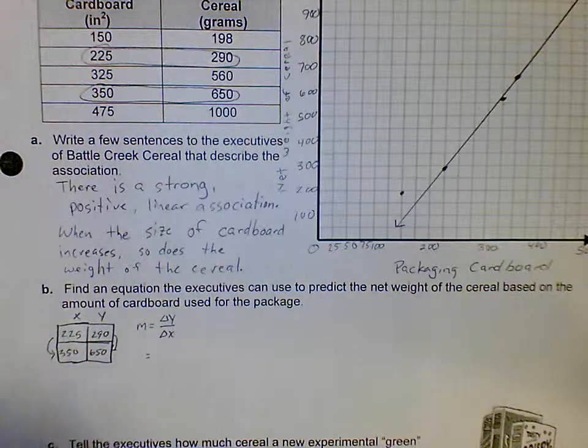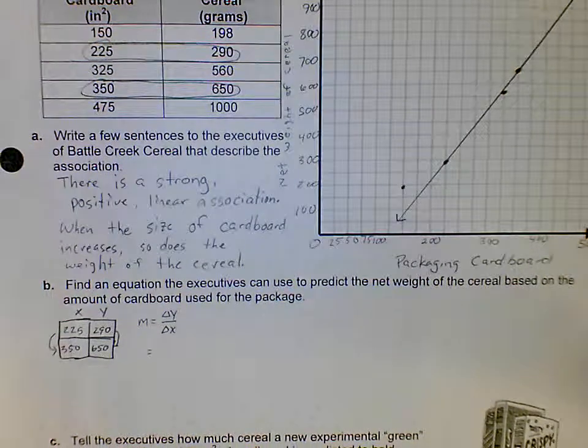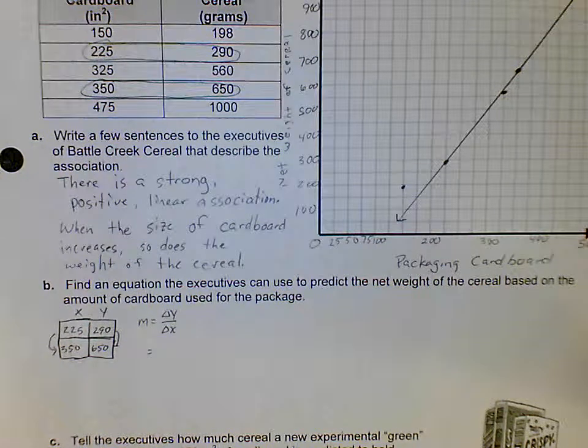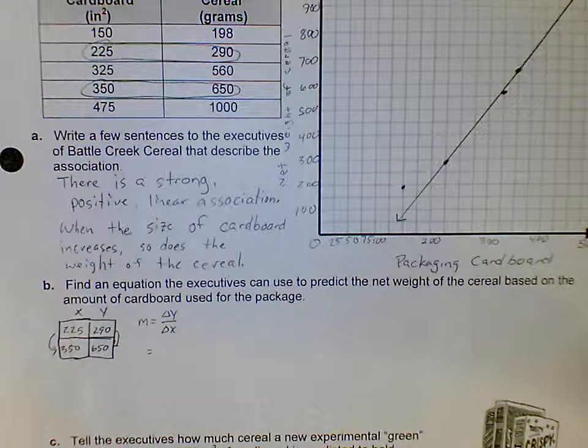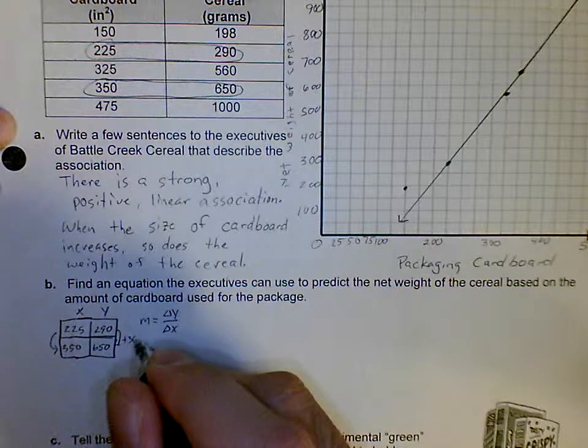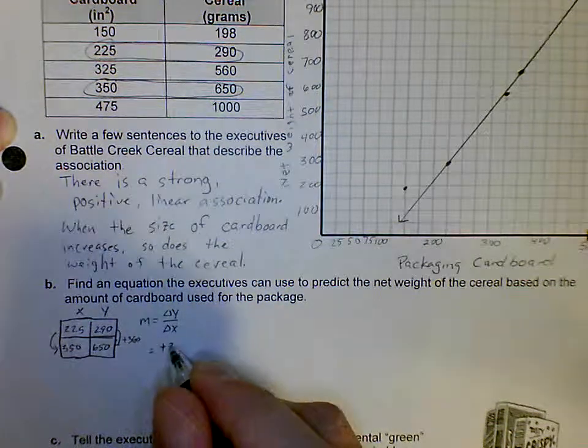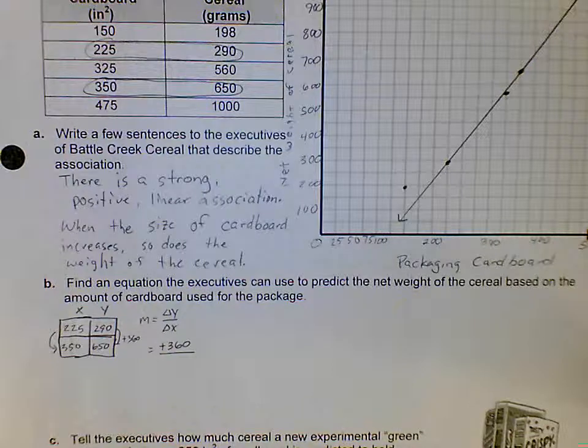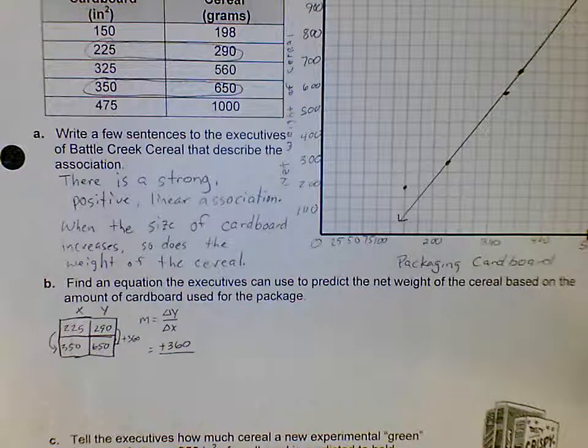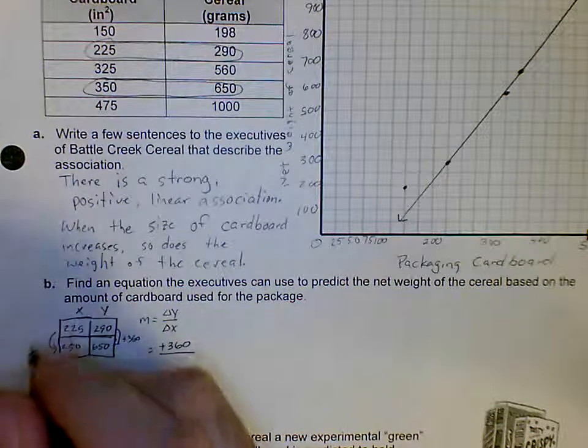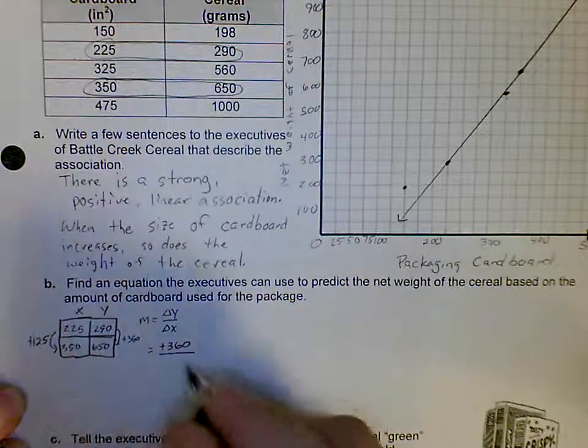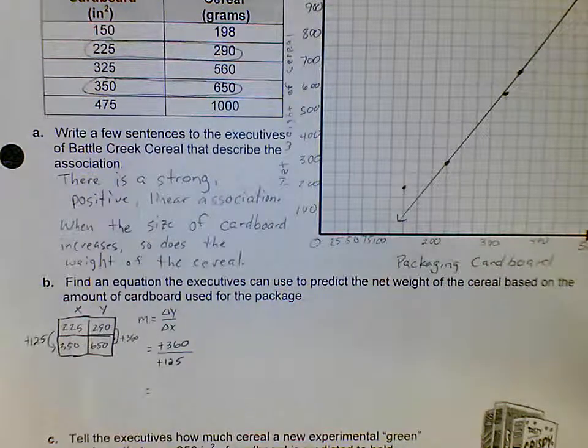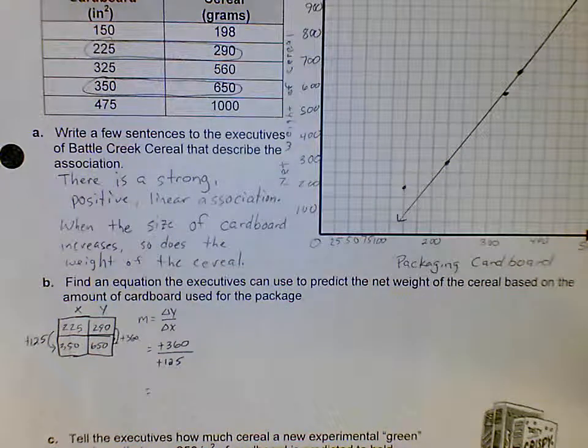I need to find my change of y and my change of x. You go from 290 to 650, so on a calculator you're going to put in 650 minus 290 and you get 360. So it's increasing by 360. My change of y is plus 360, and my change of x, subtract the two numbers, we get 125 increase. Then you just put in your calculator 360 divided by 125, and I get 2.88. So my slope is going to be 2.88.